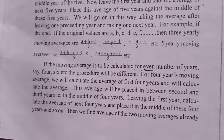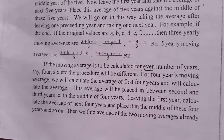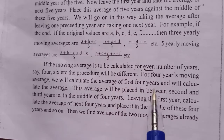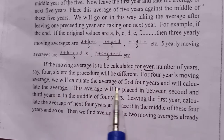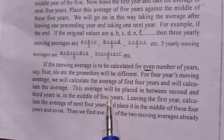Now we are going to talk about odd numbers: 3, 5, 7. Those are the odd numbers. For even number of years, the procedure is different. For 4-years moving average, we will calculate the average of the first 4 years and calculate the average.